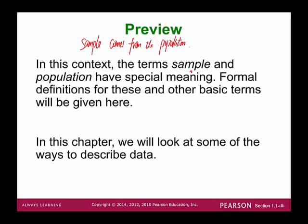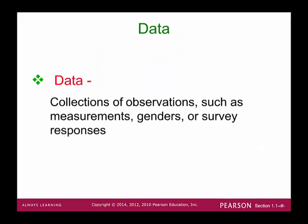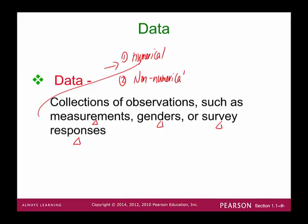We're going to take a look at different ways of describing data. First of all, data is a collection of observations such as measurements, genders, and survey responses. Data could be numerical or non-numerical. Non-numerical data, like gender and survey responses, we typically call categorical.